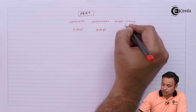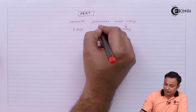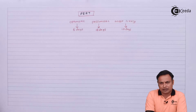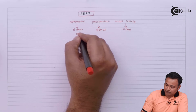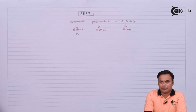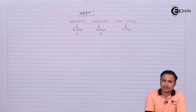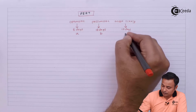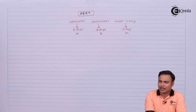So optimistic time is denoted by 'a', pessimistic time is denoted by 'b', and most likely time is denoted by 'm'. These are the three different time estimates: a, b, and m.